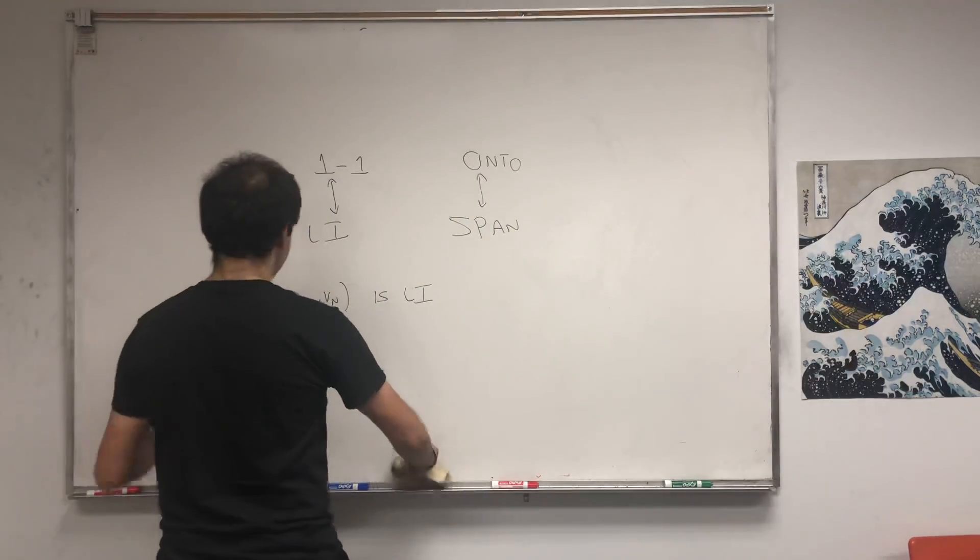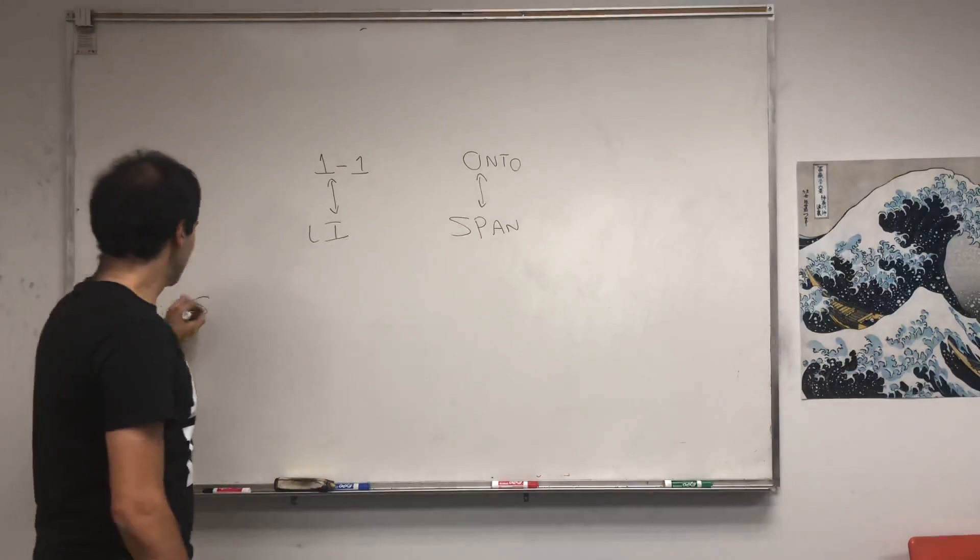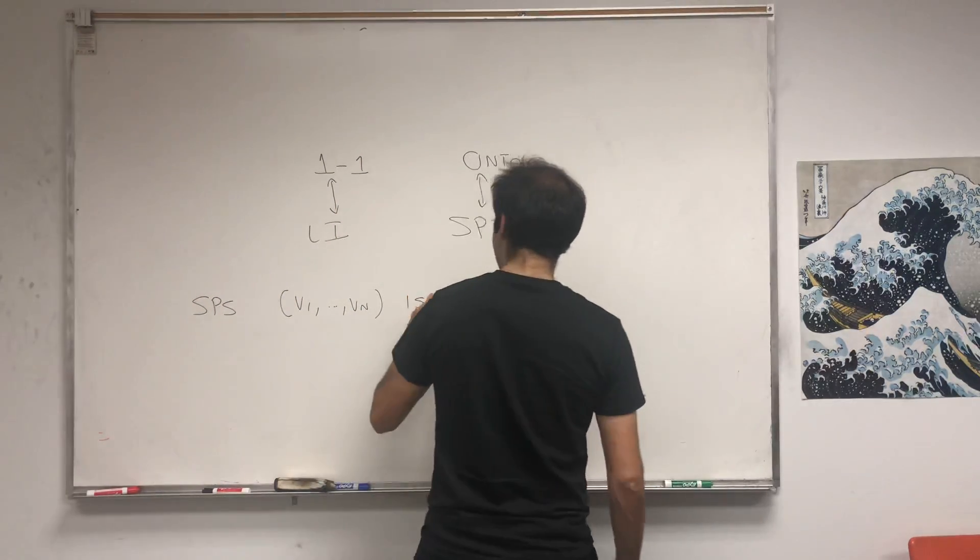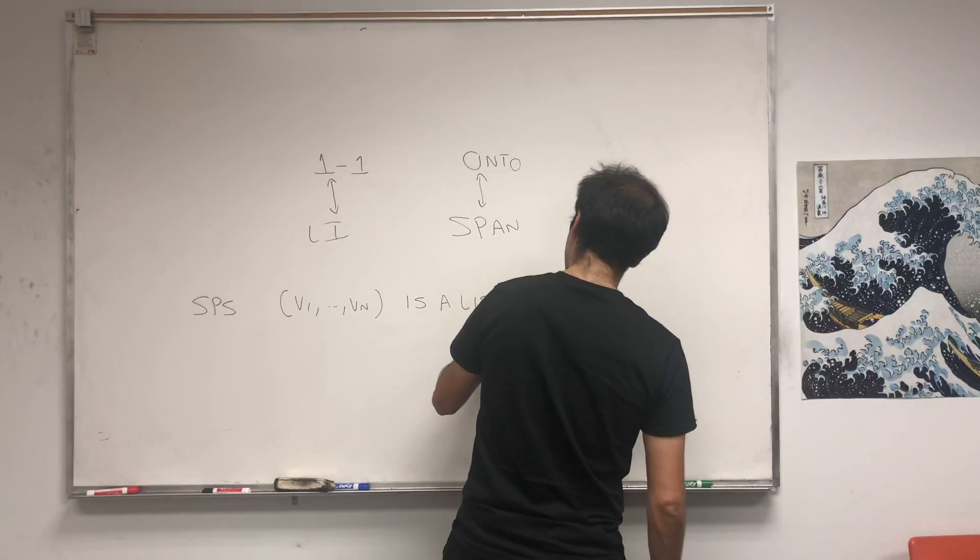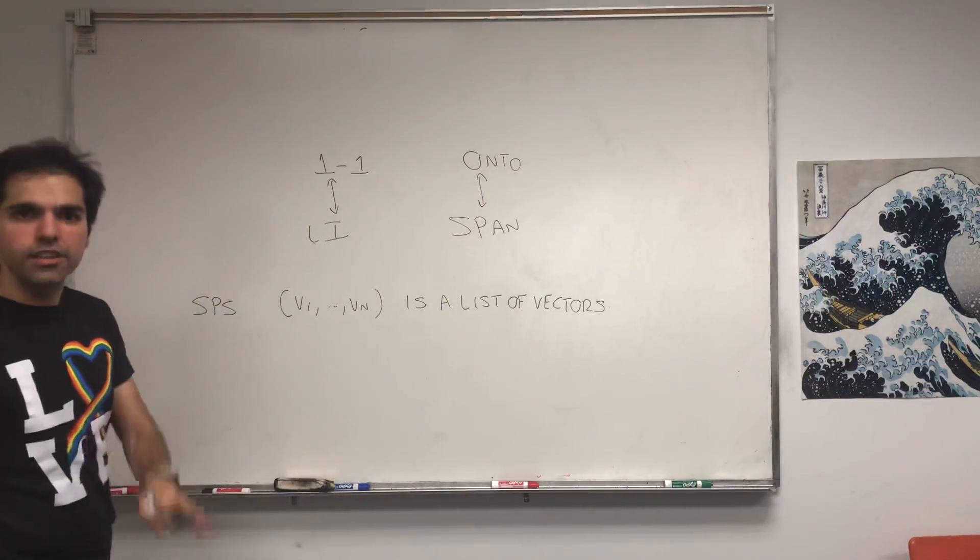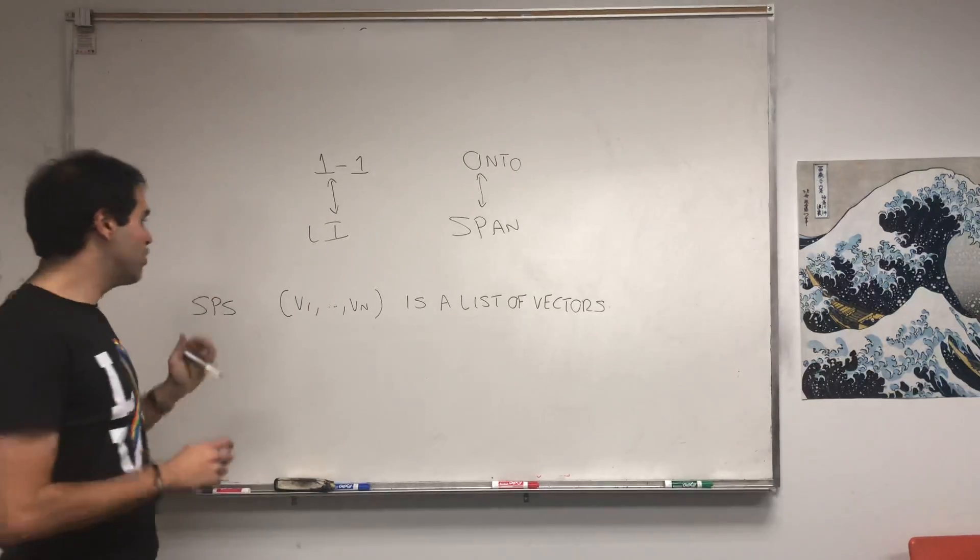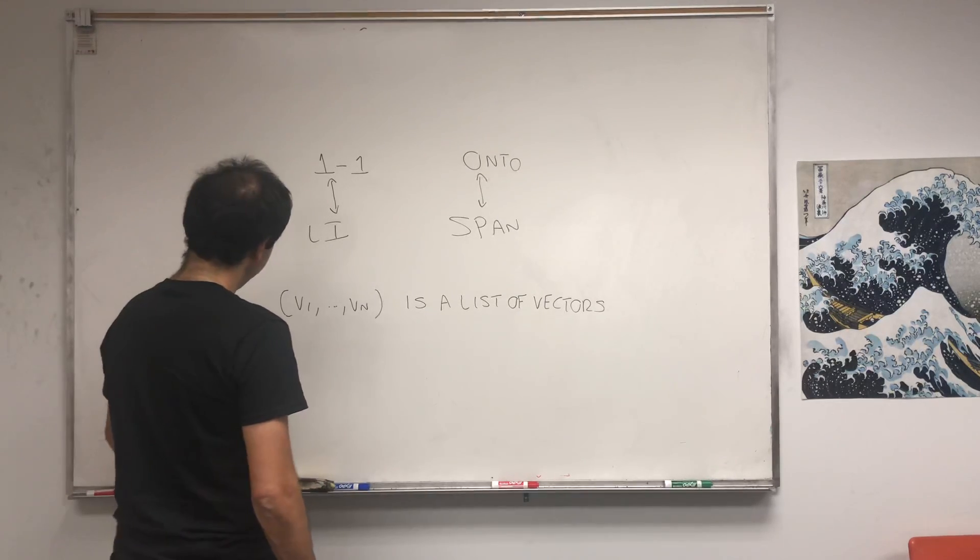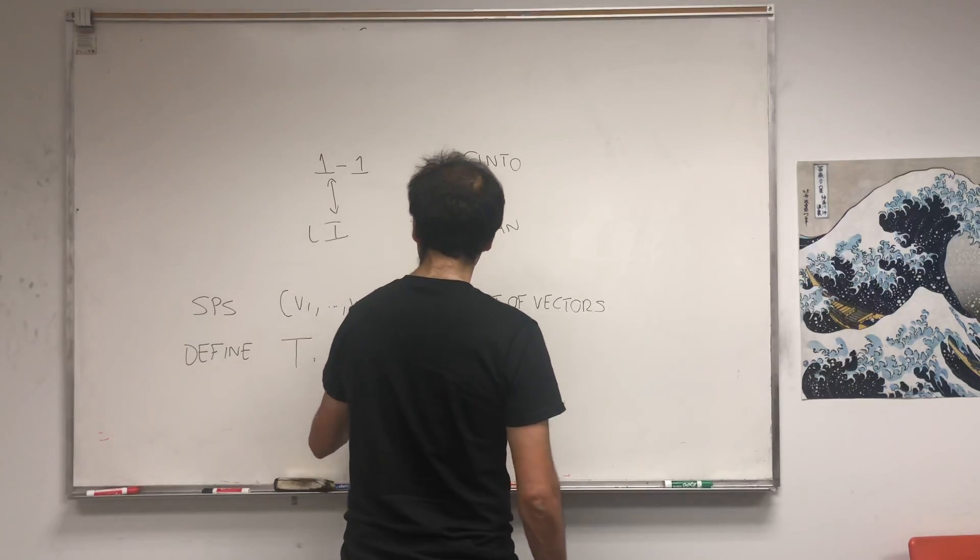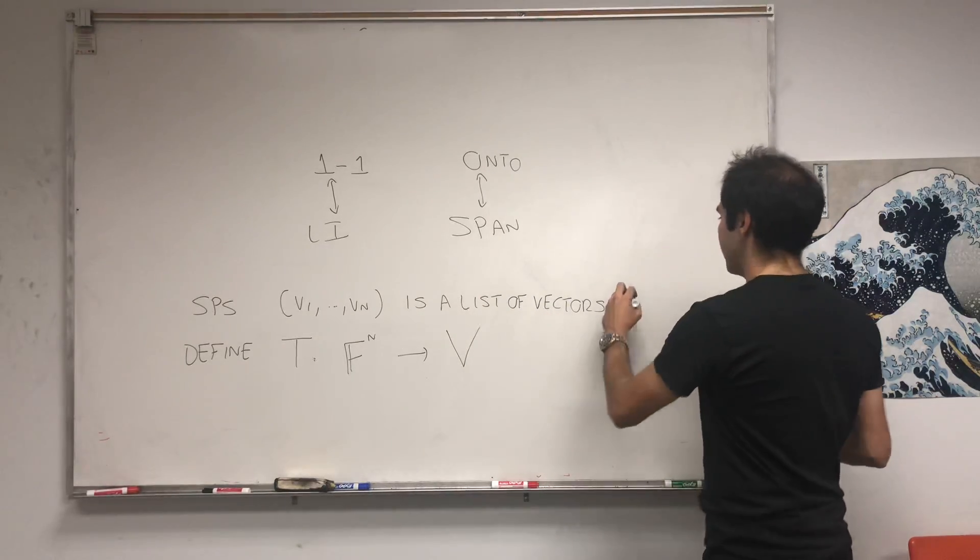And define... oh no, let me do that again. So suppose v1 up to vn is a list of vectors. We're not assuming anything about whether it's linearly independent or not. So suppose you fix this list of vectors, and define the following linear transformation.